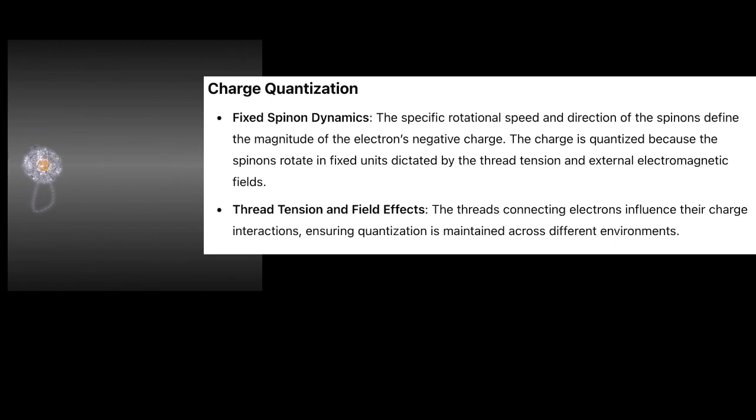Charge Quantization: Fixed Spinons Dynamics. The specific rotational speed and direction of the spinons define the magnitude of the electron's negative charge. The charge is quantized because the spinons rotate in fixed units dictated by the thread tension and external electromagnetic fields.